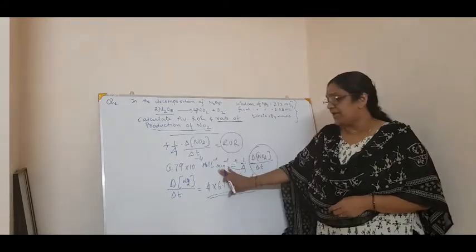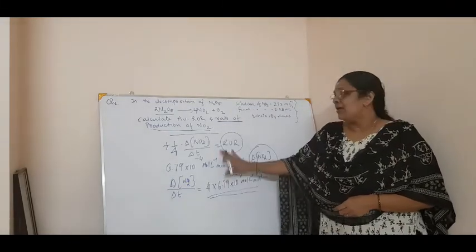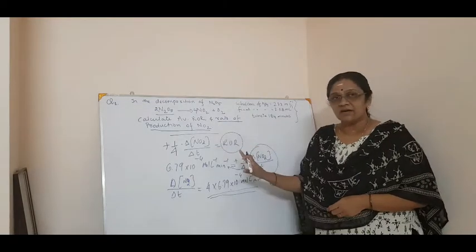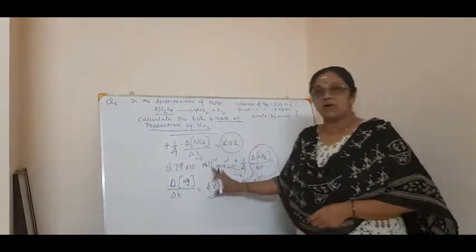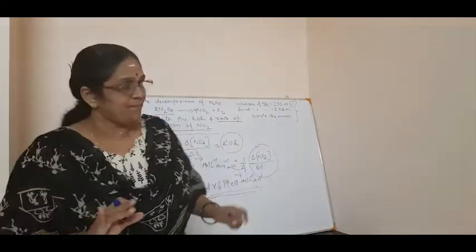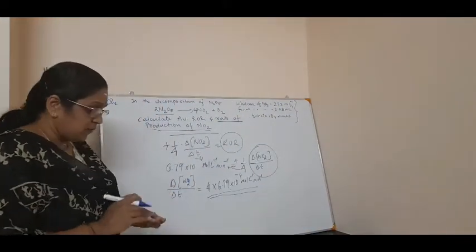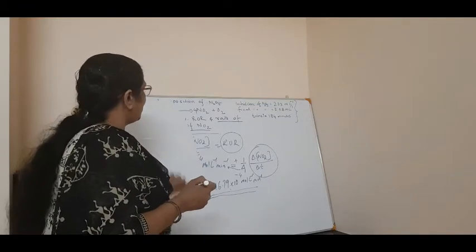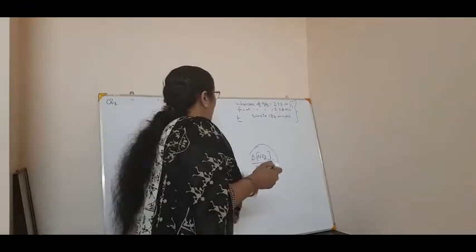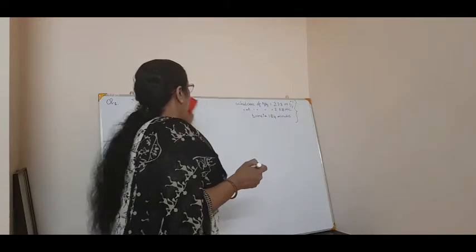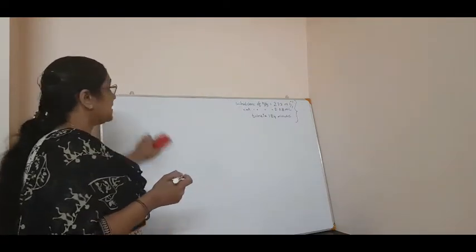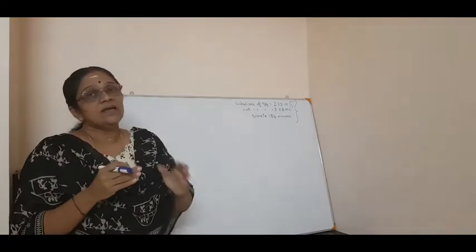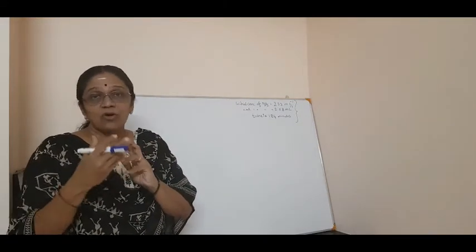This is an easy numerical that the board exam asks. Is it clear? Any doubt, please call me. Now we will move on to the next topic. In the last class, we talked about in chemical kinetics we are dealing with three things. One is the rate of reaction, which you have already studied. Next is the factors which affect the rate of reaction.